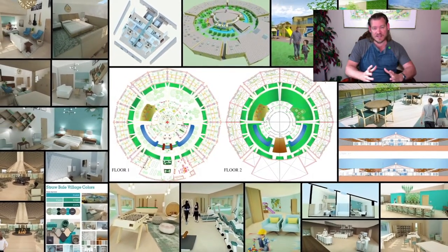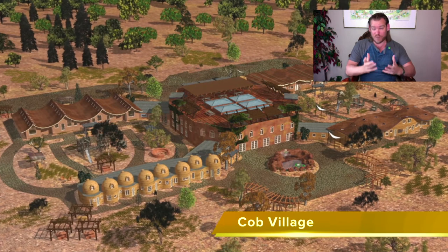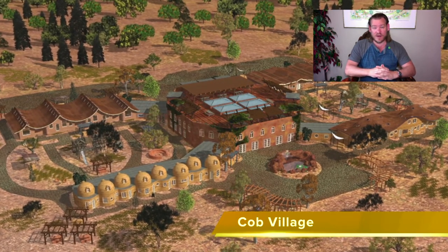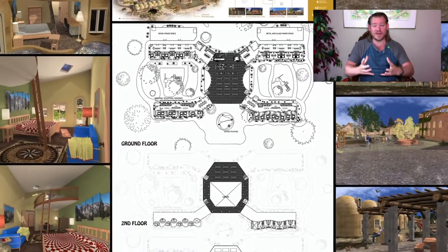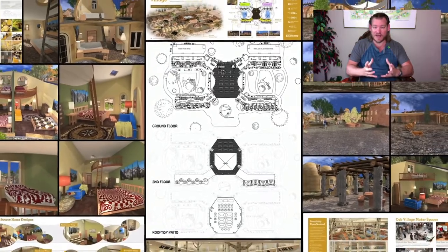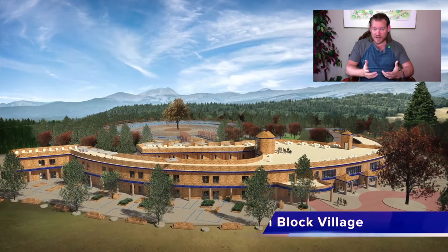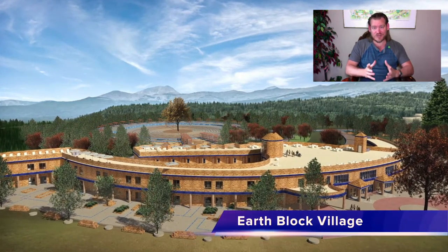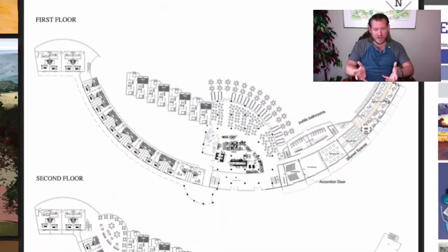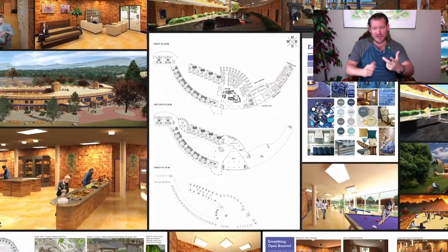We're bringing it together in one place to build One Community so that people can come and experience what we're creating, and if they agree it's a better way to live, to take everything we're creating — or any piece of it — and replicate that for themselves. The ultimate expression is a teacher demonstration hub, and as we open source and free share everything, it creates and inspires additional teacher demonstration hubs. We call it a solution model to create additional solution-creating models — designing a more sustainable world by making sustainability easy enough, affordable enough, and attractive enough so that the idea spreads on its own.